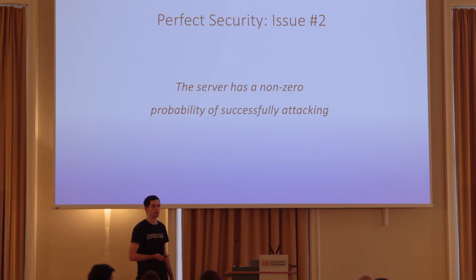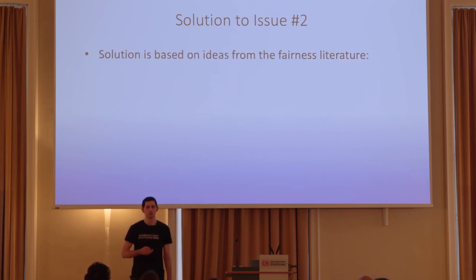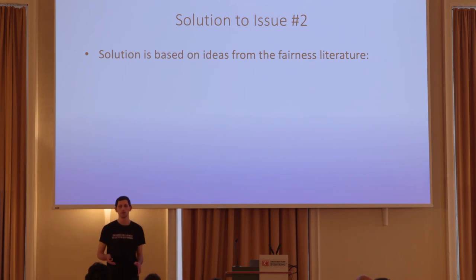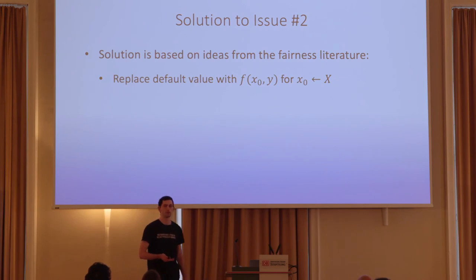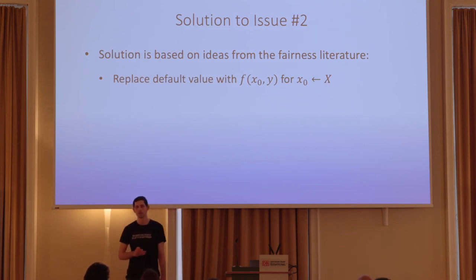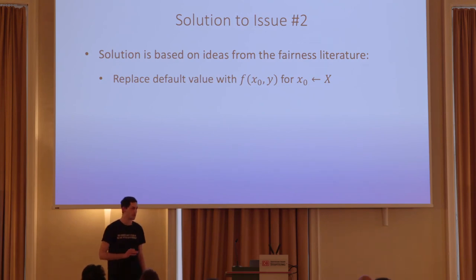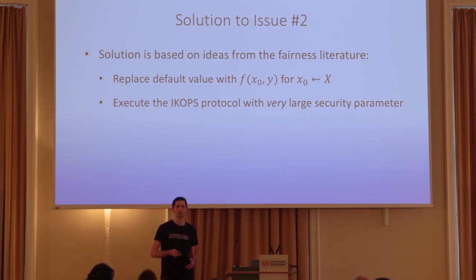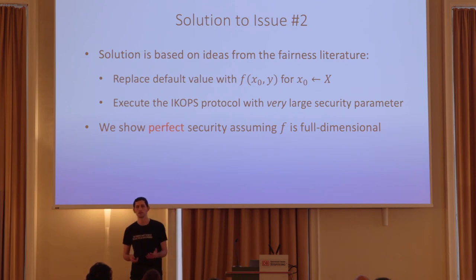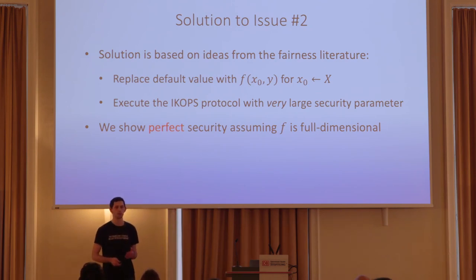For the second issue — the server being able to attack with non-zero probability — we use ideas from the fairness literature. In fairness, either both parties receive the output or none of them do, and similar ideas help here. Instead of the client outputting a default value when it finds inconsistency, it chooses X0, the server's input, uniformly at random and outputs accordingly. Additionally, the parties execute the modified ICOPS protocol with a very large security parameter. We show this achieves perfect security, assuming the function the parties compute is full-dimensional.